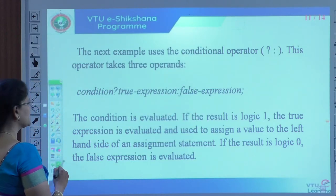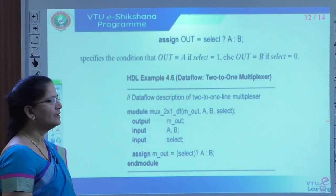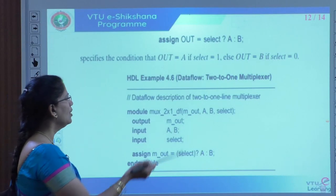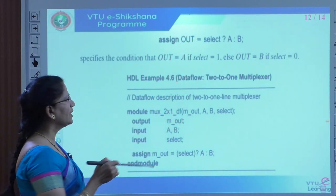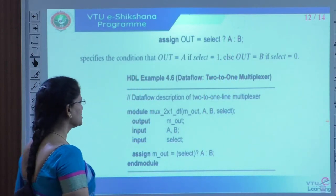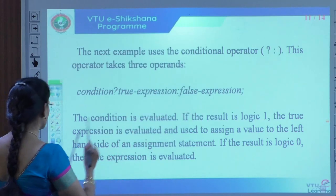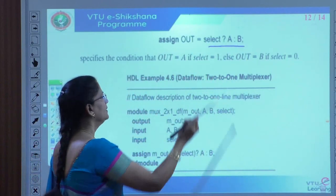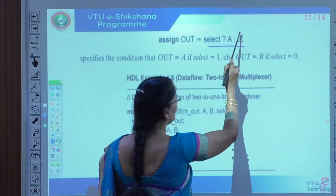This is the format of how to write it in HDL. Using 'assign' as the statement — because we must use the data flow model — the syntax is: assign out = select ? A : B. That is the conditional statement. The condition is 'select'; if true, it evaluates to A; if false, it evaluates to B.